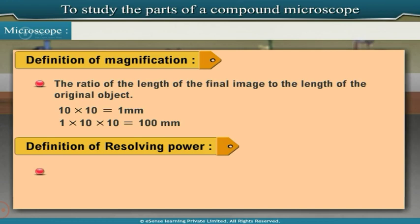Resolving power may be defined as the smallest separation at which two objects are seen. If the resolution of the microscope is good, then we can observe the microscopic details of our biological slides.